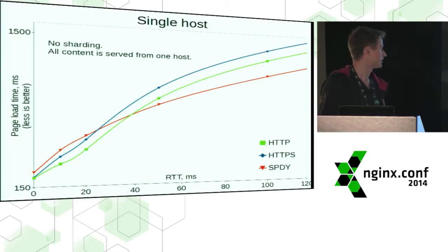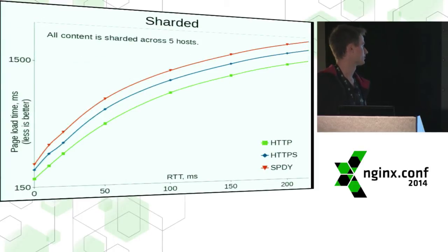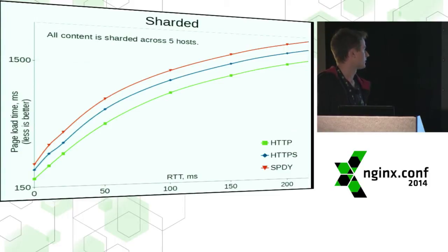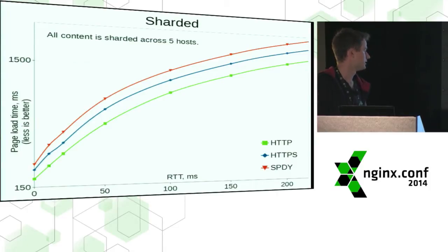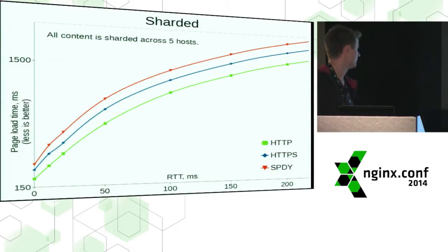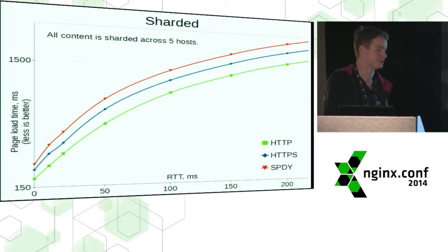But then I tried to shard this page — I sharded it across five different hosts. When you shard SPDY across different hosts, the browser is able to open only one connection to each host, while it usually opens about six connections to every host with HTTP and HTTPS. And that's how you can slow down your site by enabling SPDY.